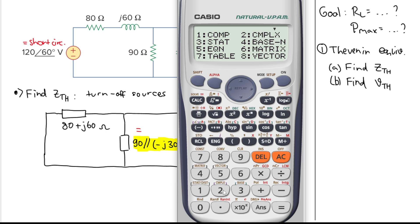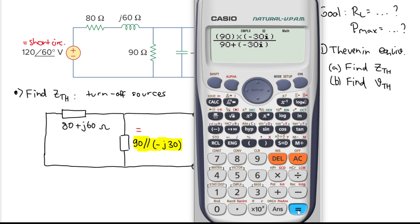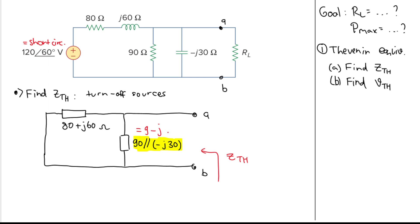Let's set up the complex number calculator. We prepare the fraction for the parallel impedance: in the numerator we multiply 90 by -30i, and in the denominator we have 90 plus -30i. The result is 9 - j27 Ω.